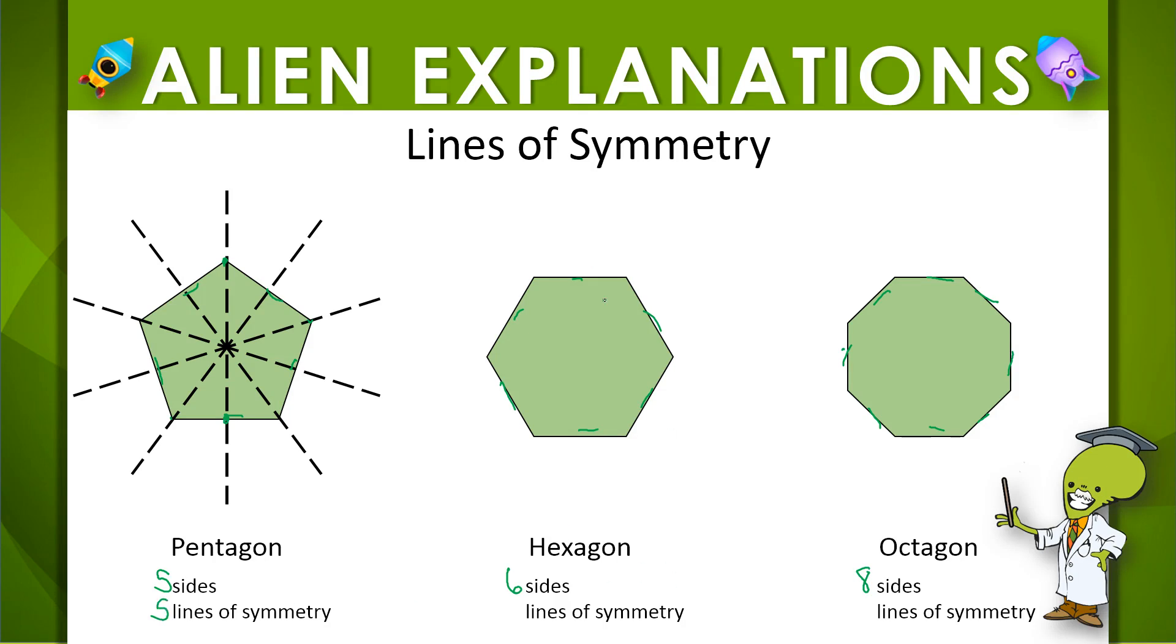For a hexagon we can see that we can cut this hexagon or do the same thing. We could go from vertex to vertex. We can go 1, 2, 3. So there's 3 lines of symmetry.